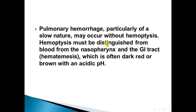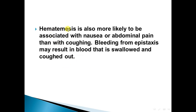Hemoptysis must be distinguished from blood from the nasopharynx and the GI tract — hematemesis — which is often dark red or brown with an acidic pH. Hematemesis is also more likely to be associated with nausea or abdominal pain than with coughing. Bleeding from epistaxis may result in blood that is swallowed and then coughed out.